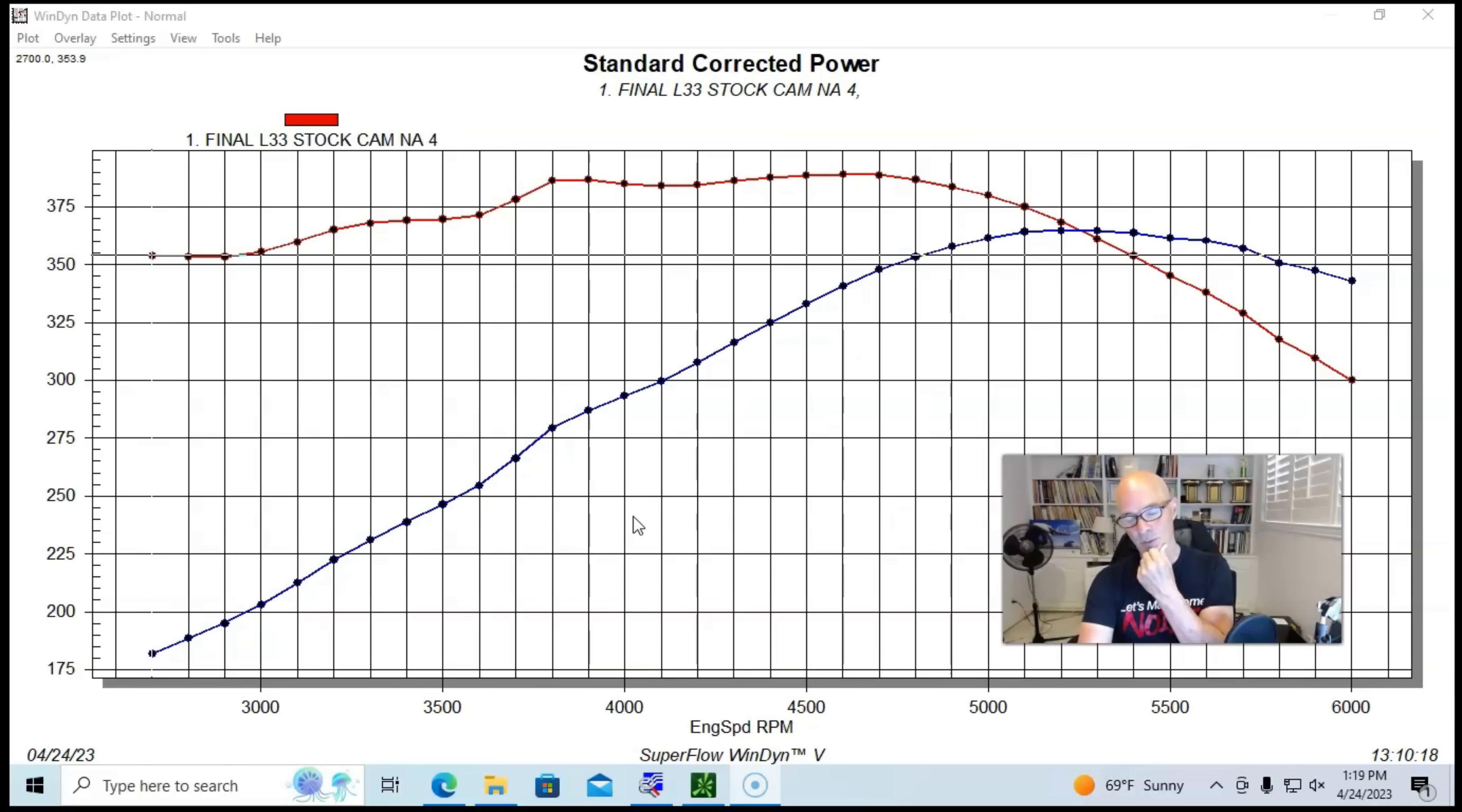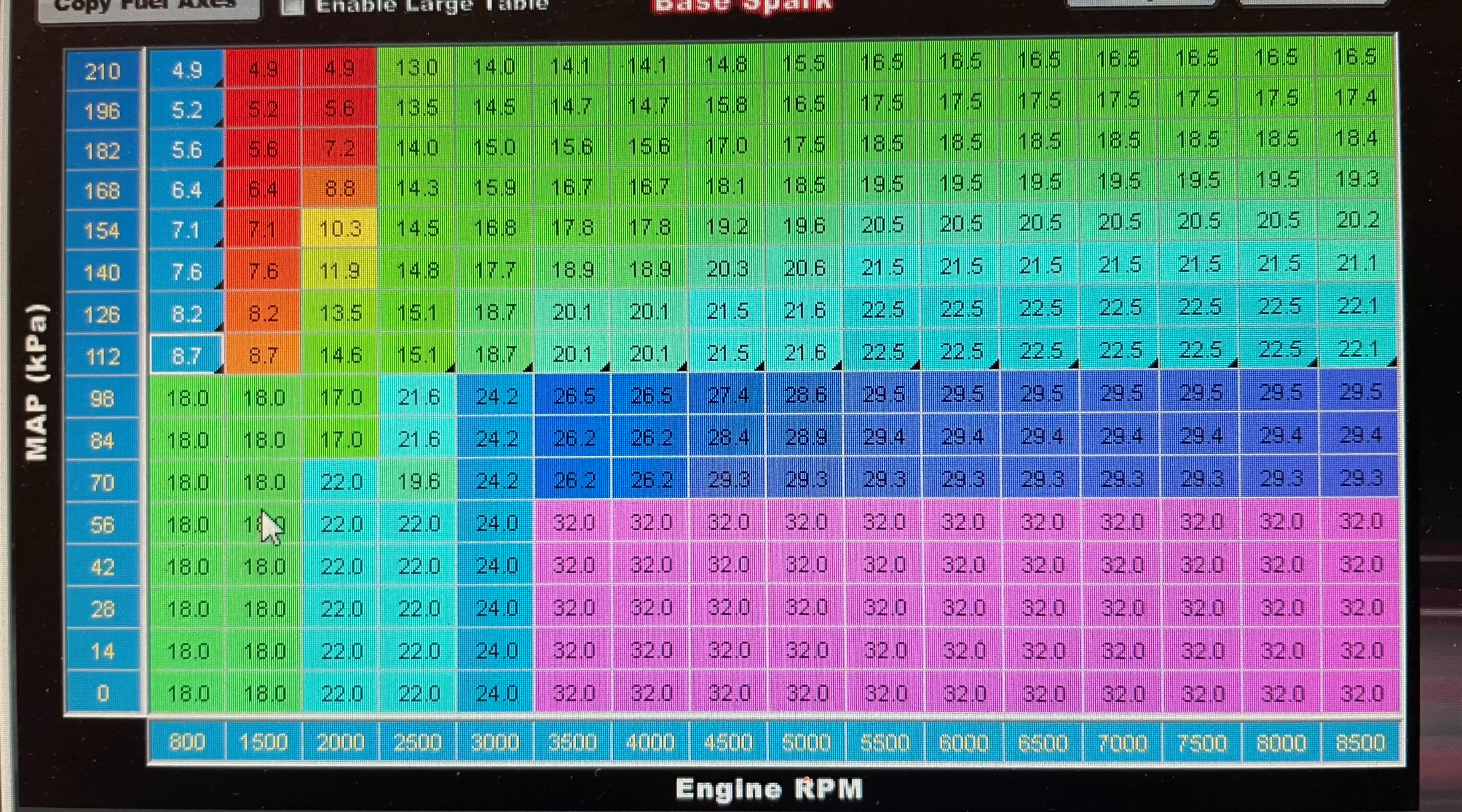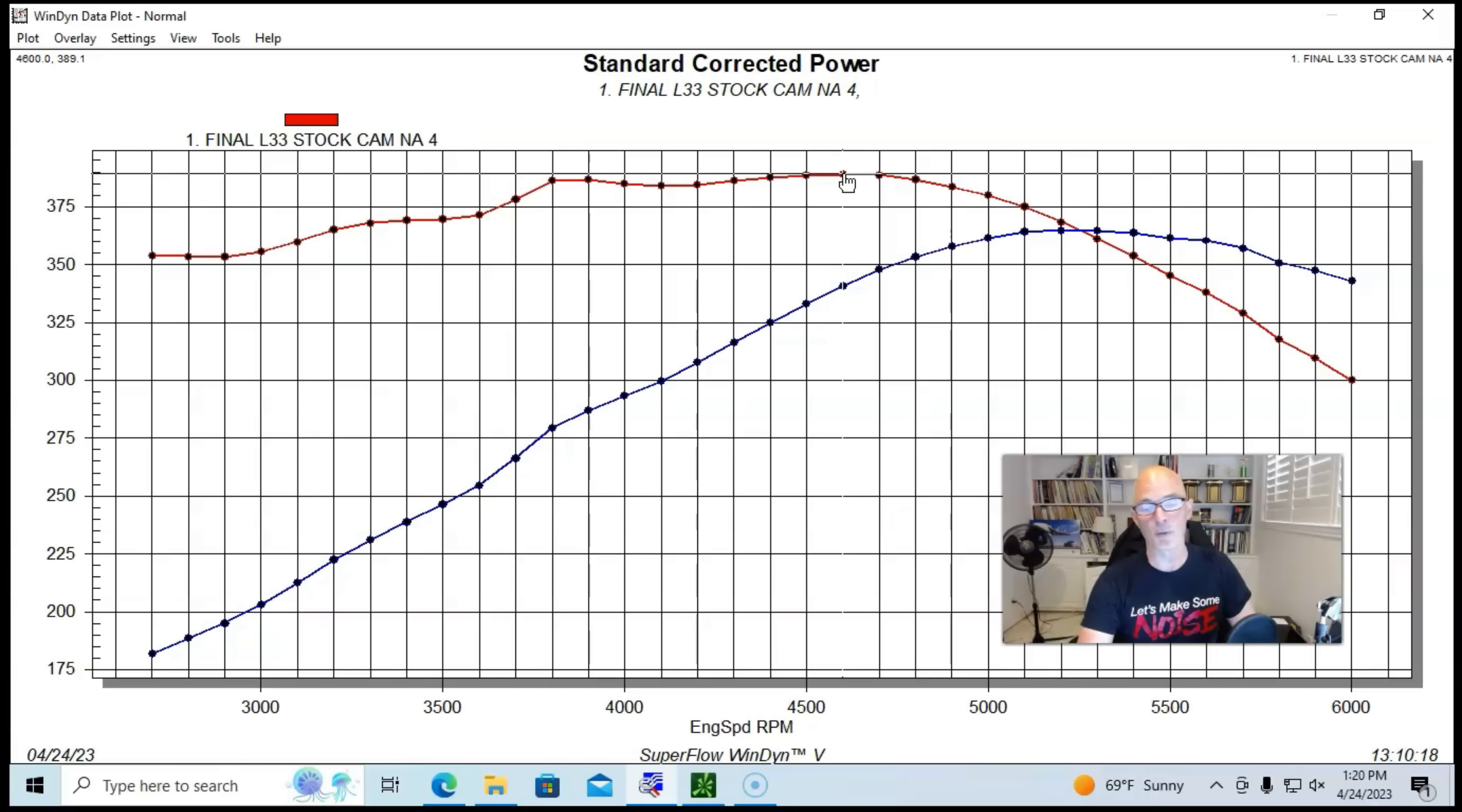So we have our L33, the aluminum motor that I got from the wrecking yard, and we ran it on the engine dyno first with the camshaft, the stock camshaft that came with the L33, and we ran it with long tube headers, with the Holley, with injectors, but stock truck intake manifold and all that. And running that manner, our combination produced 365 horsepower, 364.5, and 389 foot-pounds of torque.